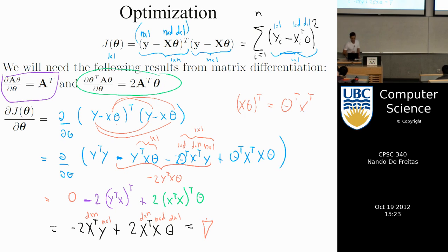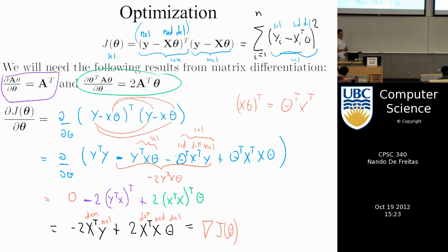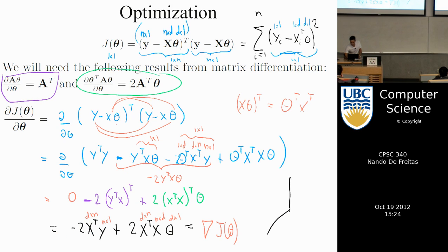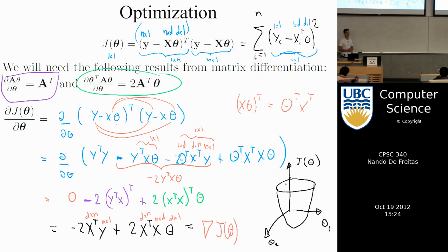What's the significance of the gradient? If theta is two-dimensional, we can plot J(theta) as a bowl. Cutting the bowl at any height gives contour plots — circles or ellipses of equal height. The gradient has the property that at any point theta, it is perpendicular to the contour lines.